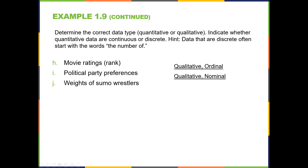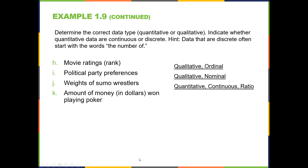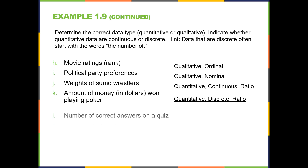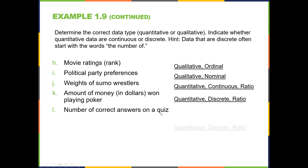Weights of sumo wrestlers. Weights are quantities measured on a continuous scale, and you can have a natural zero — absence of weight. So this would be quantitative, continuous, ratio. Amount of money in dollars when playing poker: we would be counting quantities in dollars, and we could technically have zero dollars, so this would be quantitative, discrete, ratio. The number of correct answers on a quiz: we're counting correct answers, so quantitative, discrete, and since you could have zero correct answers, it is ratio.